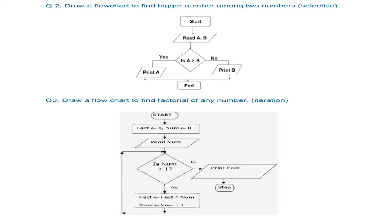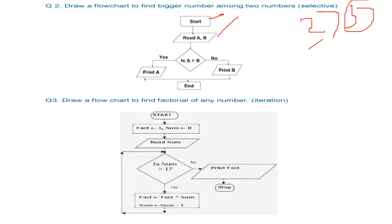Now, a flowchart to find the bigger number among two numbers. If we check 2 and 3, we check whether 2 is greater than 3. Since 2 is not greater than 3, then 3 is bigger; otherwise 2 is bigger. So we start, read A and B, check whether A is greater than B. If yes, print A; if no, print B, then end.